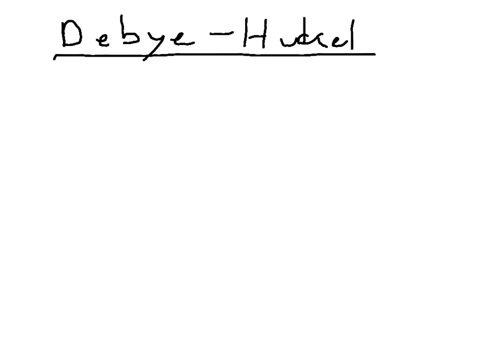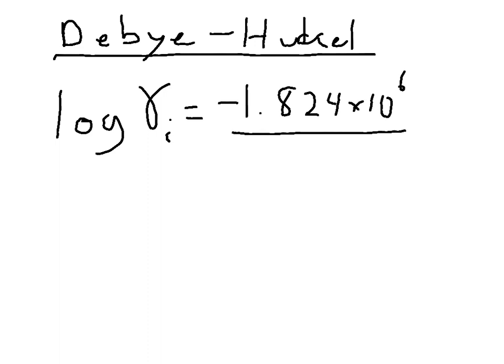And I'll give you the general form of this first. And this is one of the few times you'll see a base 10 logarithm in this class. And that's the log of an activity coefficient of an ion is equal to negative 1.824 times 10 to the sixth all over the dielectric constant of the solvent times the absolute temperature all to the three halves.